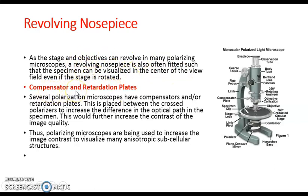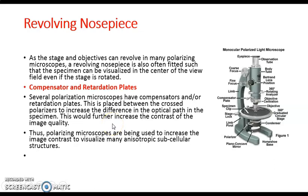Next are the compensator and retardation plates. Several polarization microscopes have compensation or retardation plates. These are placed between the crossed polarizers to increase the difference in the optical path in the specimen, and this helps in increasing the contrast and overall image quality.